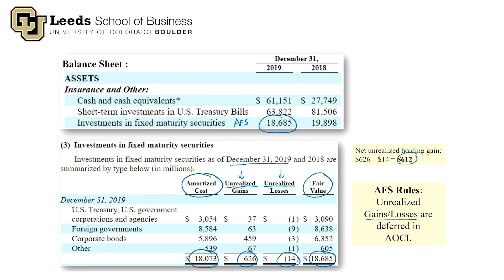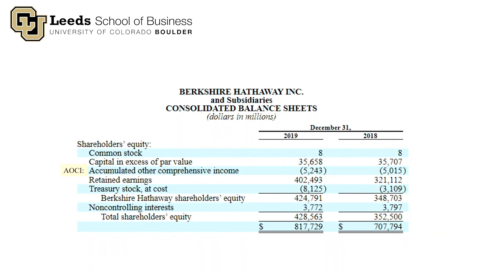Now I'll show you exactly where these deferred amounts appear. Going back to the balance sheet — in the Shareholders' Equity section — there's an account called AOCI, Accumulated Other Comprehensive Income. As of December 31st, 2019, it had a negative balance in equity, which means a debit balance of $5,243,000,000. The unrealized holding gains and losses on available for sale debt securities are contained within that AOCI account balance.